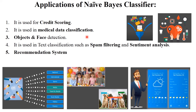There are different applications of Naive Bayes classifier: credit scoring in credit card systems where multiple features and functions are involved; medical data classification — identifying disease based on symptoms; object and face detection; spam email filtering; sentiment analysis; and recommendation systems. For example, in Amazon or Flipkart, products are recommended based on your purchase history. For all these purposes, the Naive Bayes classifier algorithm is used.